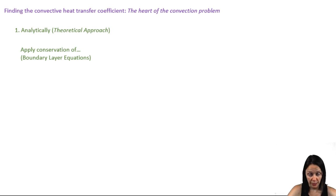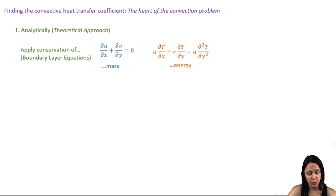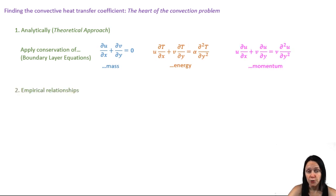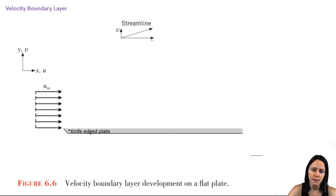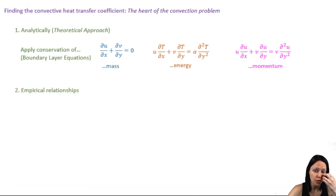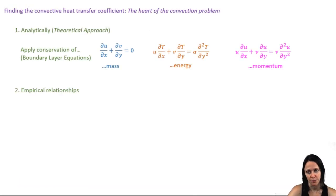There are three boundary layer equations: the conservation of mass, the conservation of energy, and the conservation of momentum. This is not a trivial task, and we'll be looking at an overview of some of the very clever solutions to these equations for the simple geometry of flow over a flat plate. In most cases, though, an analytical solution is not possible, and we'll have to rely on empirical relationships.